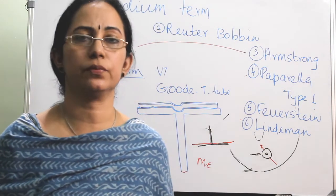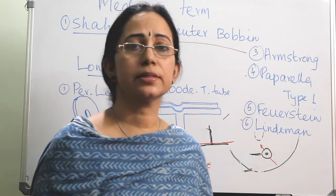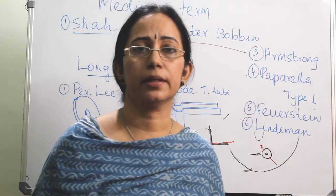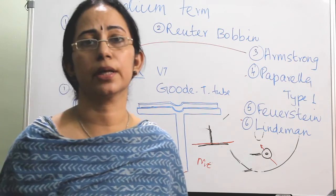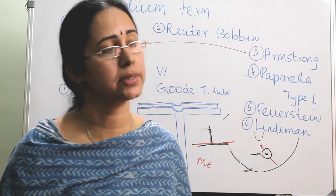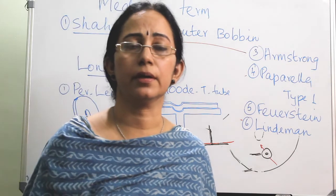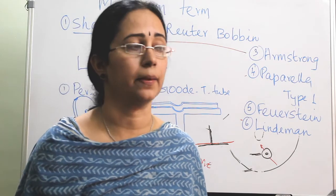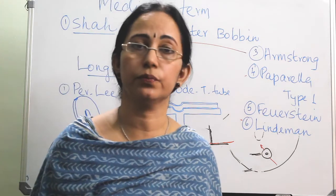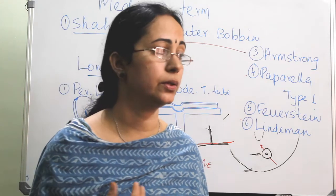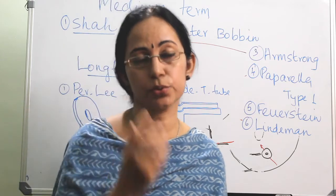The complications of ventilation tubes: at the time of introduction there is a chance of bleeding. Later on there can be infection and persistent bleeding. If the amount of secretions is very copious, there will be persistent drainage of fluid through the ventilation tube. There can also be a chance of blockage of the tube.